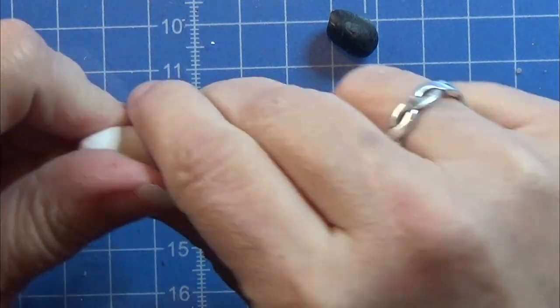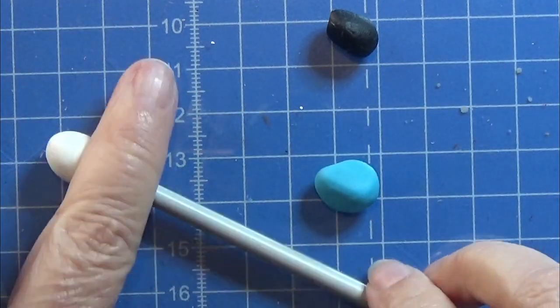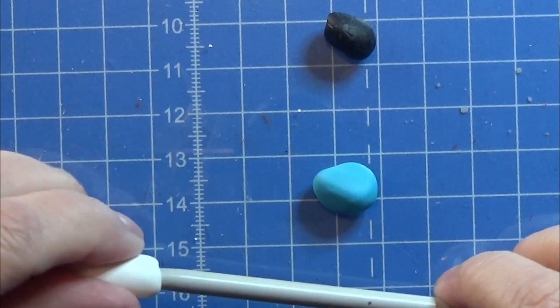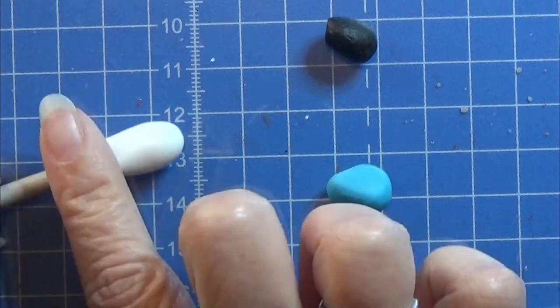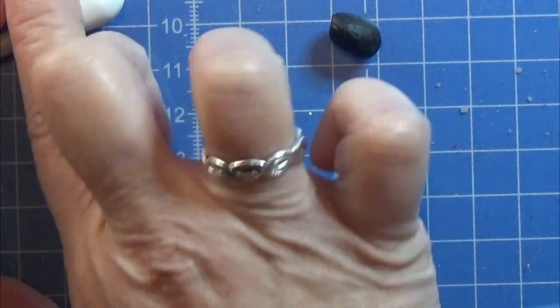I'm taking the white clay and pushing it over the end of one of my knitting needles. This is a bigger knitting needle; it could have been a tiny bit smaller than this one.